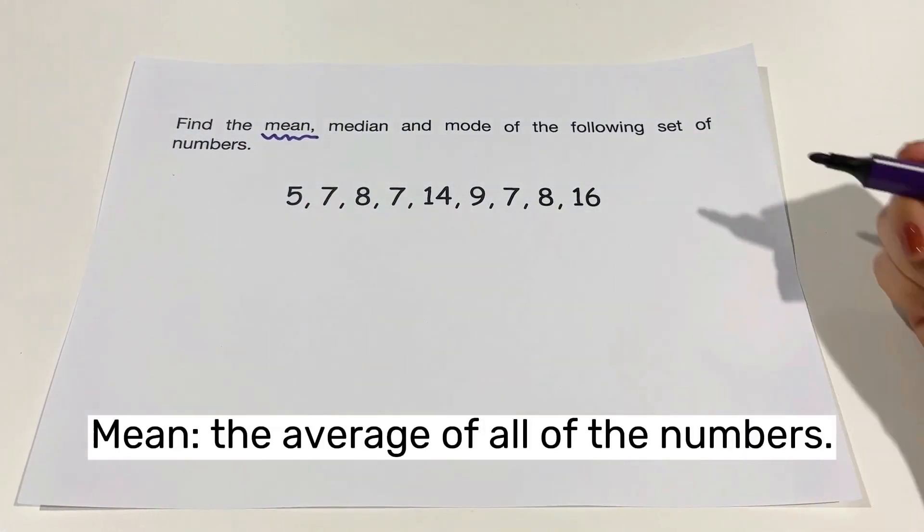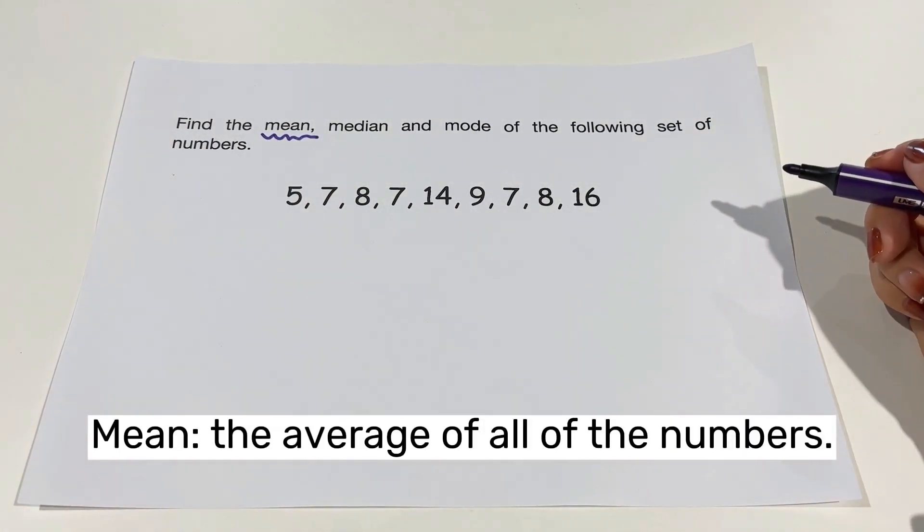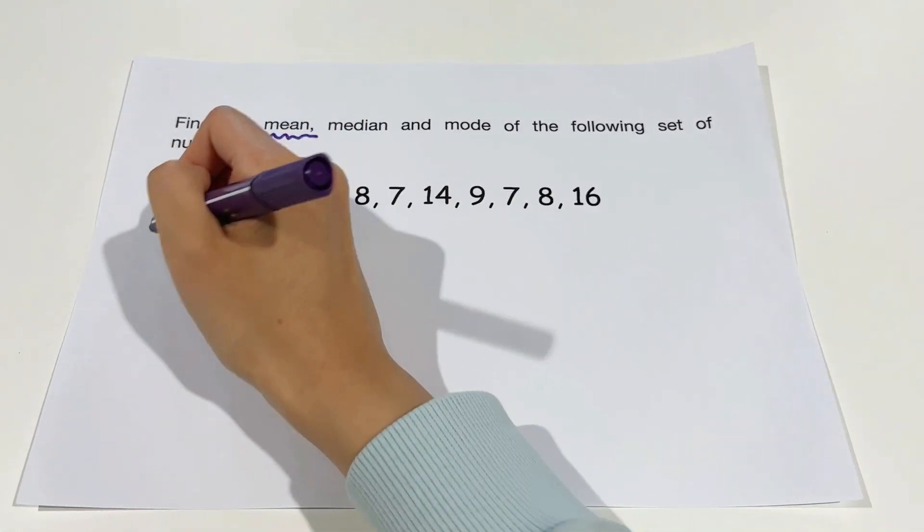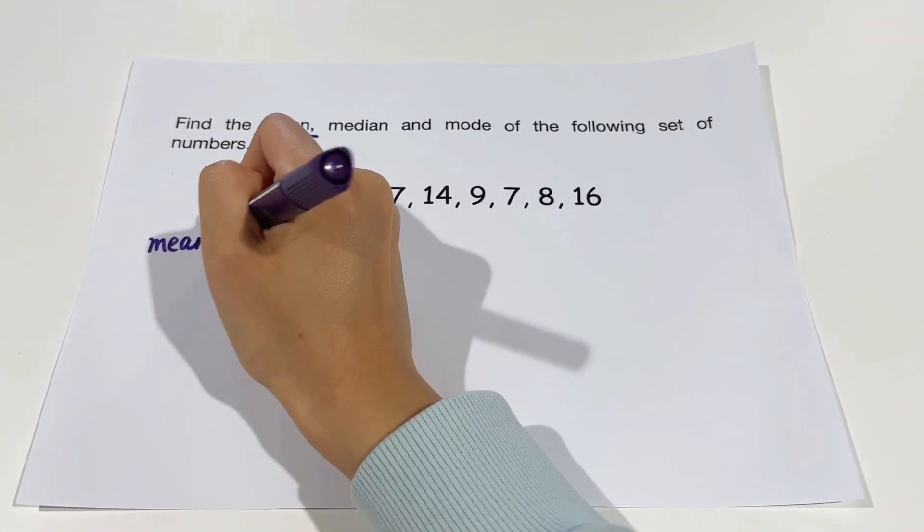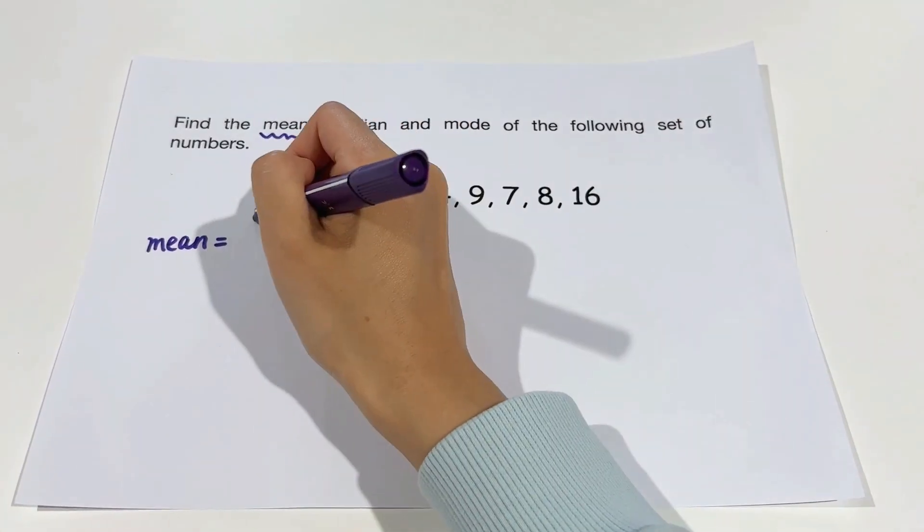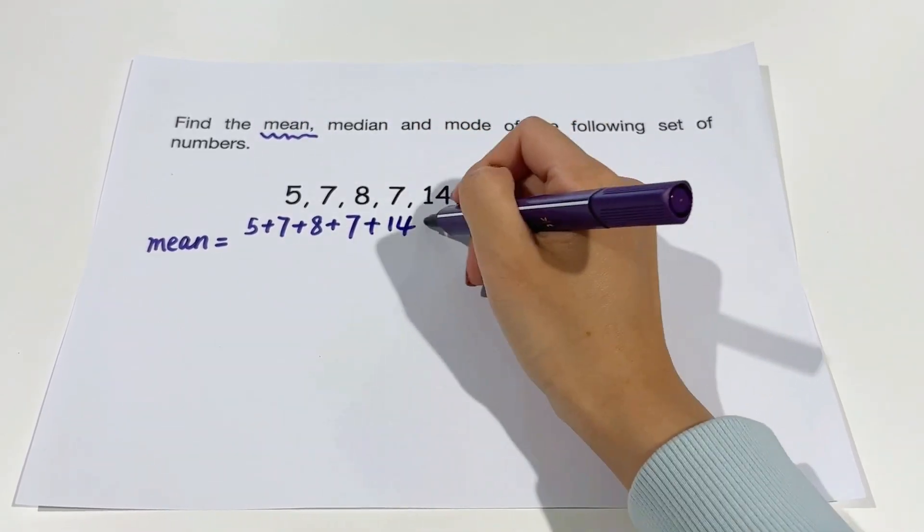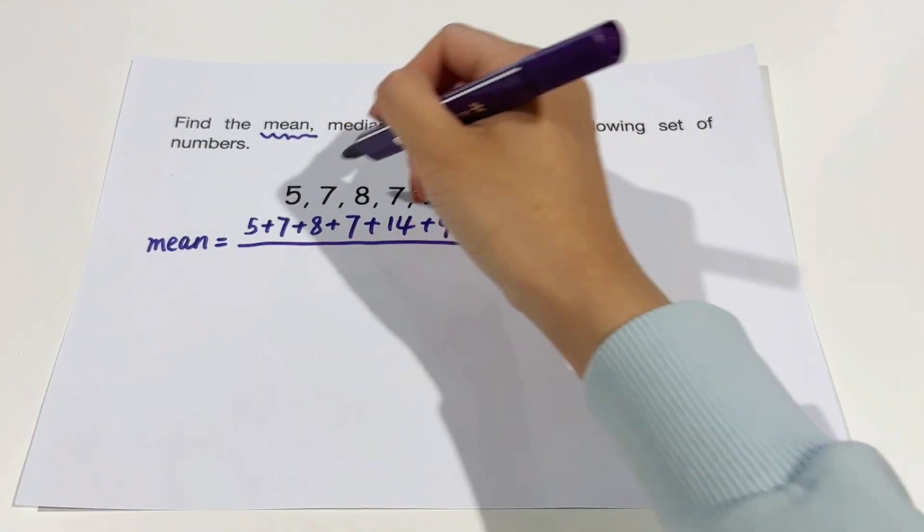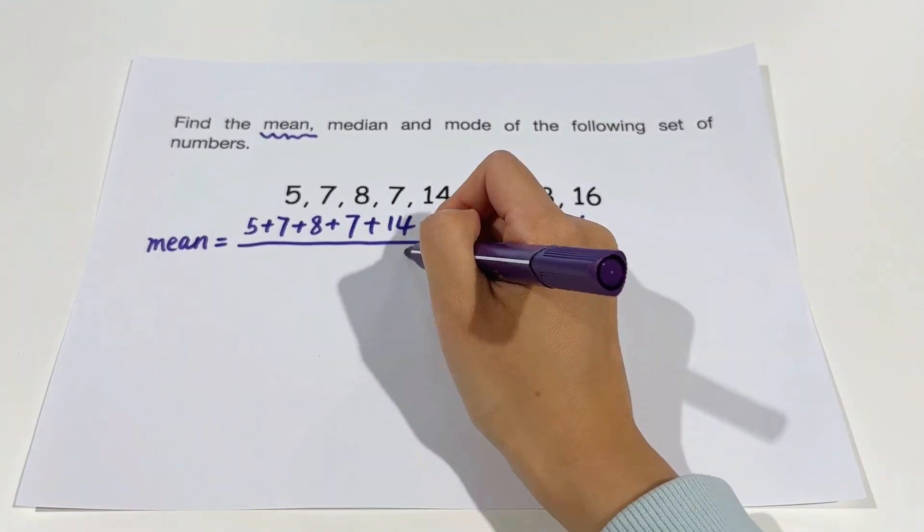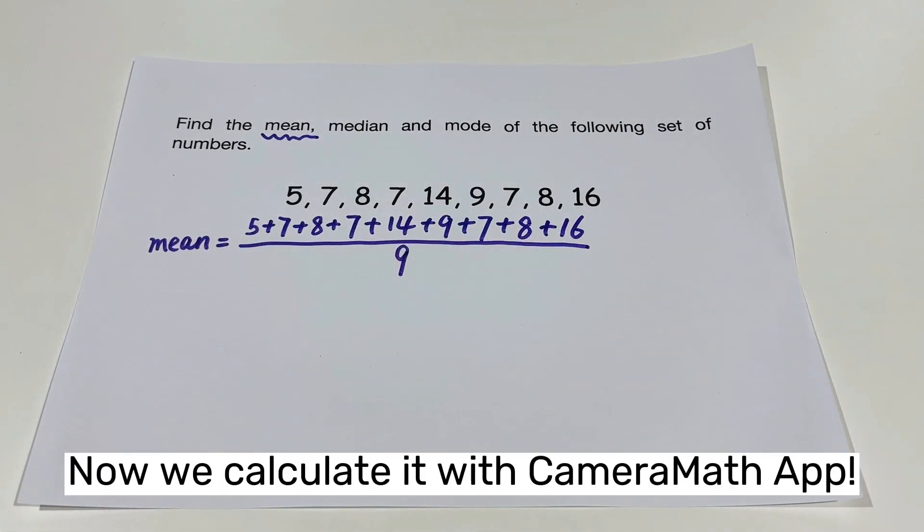Mean is the average of all of the numbers. It's obtained by simply dividing the sum of all values in a data set by the number of values. So we average 5 plus 7 plus 8 plus 7 plus 14 plus 9 plus 7 plus 8 plus 16, and then divide that by the number 9.